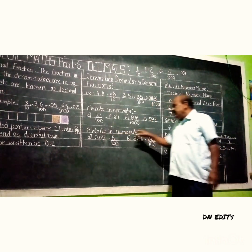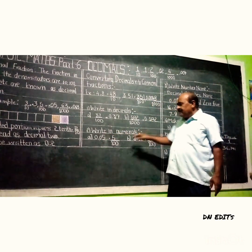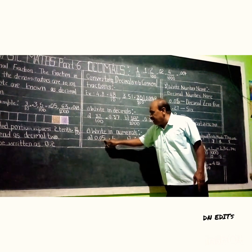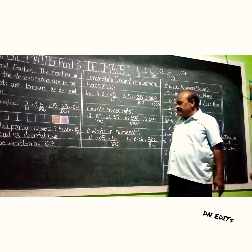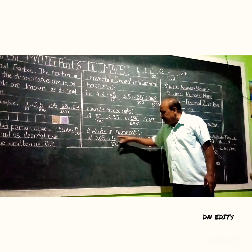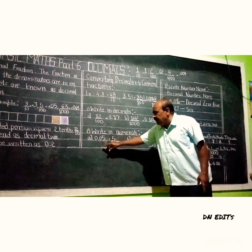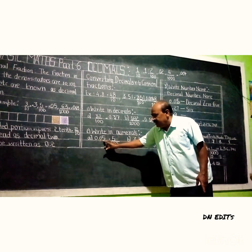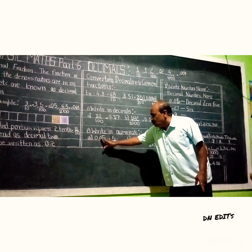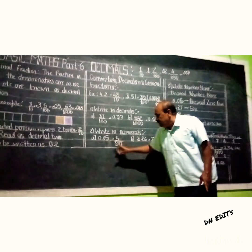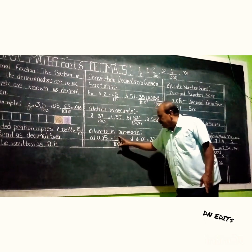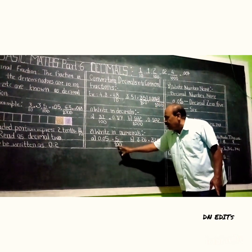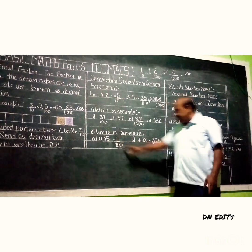Now write in numerals. Here, 0.05 — you can write this in numerals as 5 divided by — after the decimal, how many numbers are there? Two. So you write 5 in the numerator and in the denominator write 1 followed by two zeros: 5 by 100.